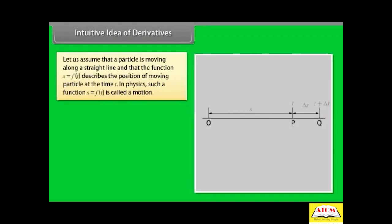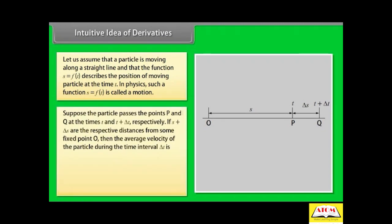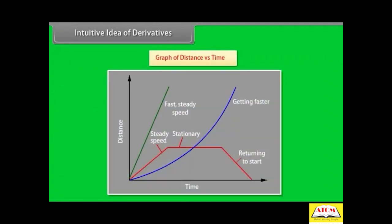Intuitive idea of derivatives. Let us assume that a particle is moving along a straight line and that the function s = f(t) describes the position of a moving particle at time t. In physics, such a function is called a motion. Suppose the particle passes points p and q at times t and t plus delta t respectively. If s plus delta s are the respective distances from some fixed point o, then the average velocity during the time interval delta t is: delta s / delta t = [f(t + delta t) - f(t)] / delta t = distance travelled / time elapsed. Below is the graph of distance versus time.